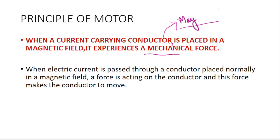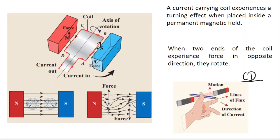Let us repeat. When electric current is passed through a conductor placed normally in a magnetic field, a force acts on the conductor and this force makes the conductor move. So the conductor is going to turn — that is explained in detail in the book.